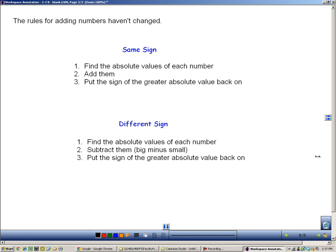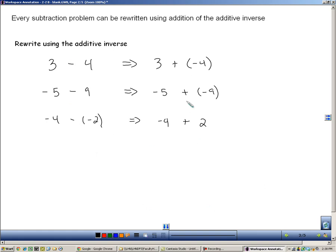These are the same rules that you learned in the last section, section 2-2A. Same sign add and different sign subtract. This idea of looking for the absolute values and adding them when their sign is the same and looking for the absolute values and subtracting them. We can only use these rules when we turn subtraction problems into addition by adding the additive inverse.